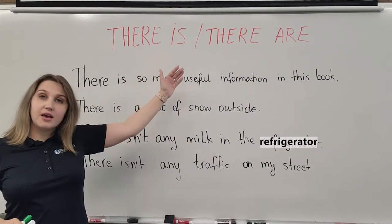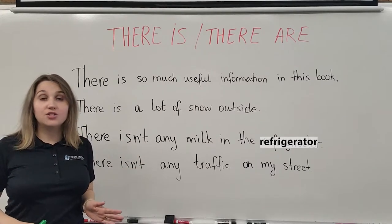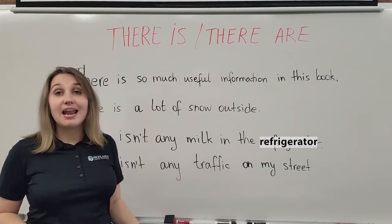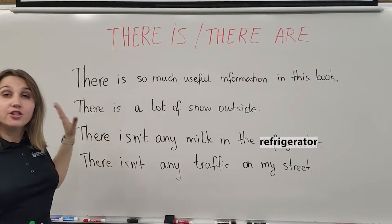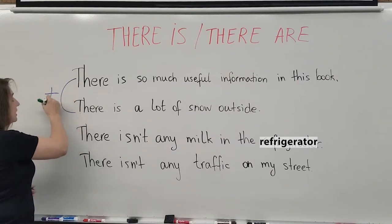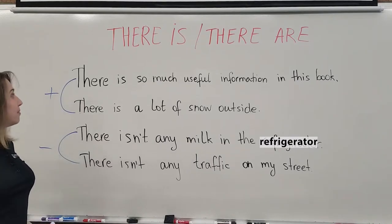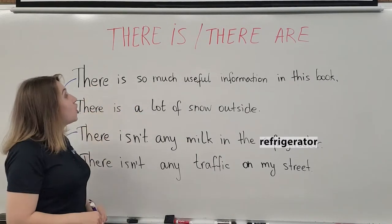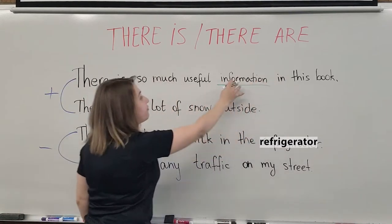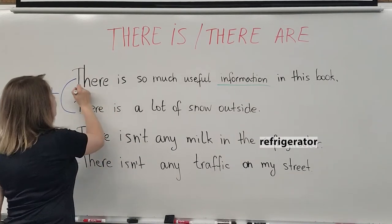We use the form 'there is' when we talk about non-count nouns. Those are the ones that are only used in singular — always used as one. I have four different sentences here. The first two are affirmative sentences — in other words, positive — and the next two are negative. The first one: 'There is so much useful information in this book.' The word 'information' is a non-count noun, therefore I'm using 'there is'.